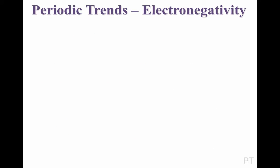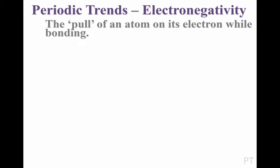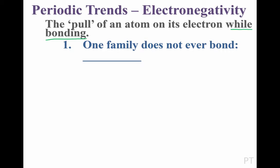Now we'll talk about our final periodic trend: the trend of electronegativity. This term is long and intimidating, but it's a very important concept in chemistry. Electronegativity is the pull of an atom on its electrons while it's bonding. This is important because it means we won't discuss electronegativity for the family that never bonds — the one that already has a full set of valence electrons — the noble gases.